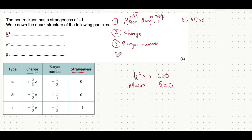Lastly, you need to ask yourself about the strangeness. Strangeness is a bit finicky — if a particle does have strangeness, it will tell you specifically in the question. If it doesn't, you always assume strangeness of zero. Here, it tells you the neutral K-on has a strangeness of plus one. A strange quark has strangeness of minus one, and an anti-strange quark has everything opposite: charge of +1/3 e, baryon number of -1/3, and strangeness of +1. So one of the quarks of the K-naught meson must be an anti-strange quark to produce that strangeness of plus one.